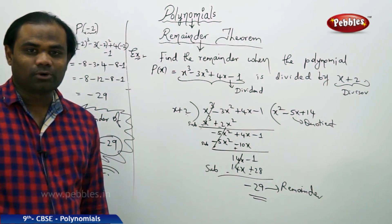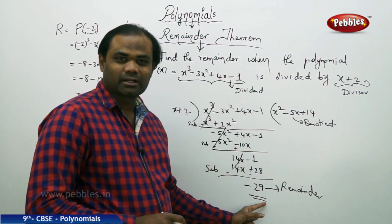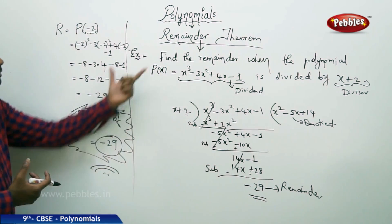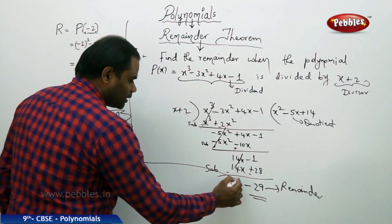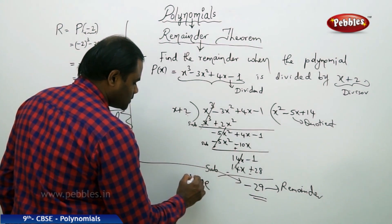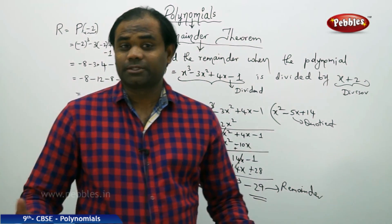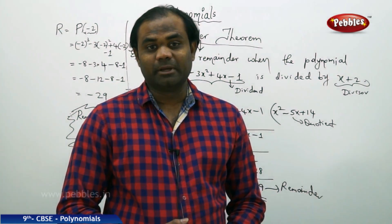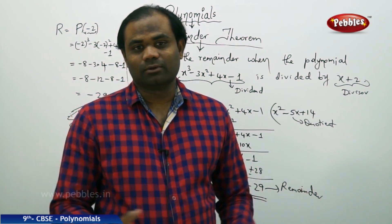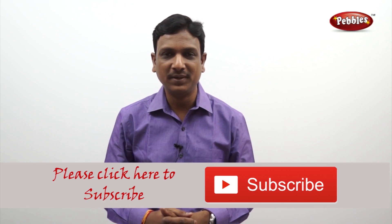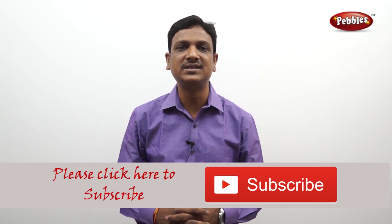Most importantly, when I find the remainder through the long division method I get minus 29, and when I use the remainder theorem I also get minus 29 — and hence they are the same. This concludes that the remainder theorem is very much true. Remainder theorem is most important in finding the remainder in polynomial divisibility. If you like this video please give a thumbs up and subscribe to our channel to get more videos on the CBSE syllabus.